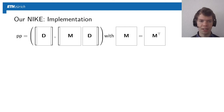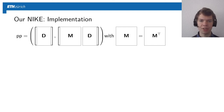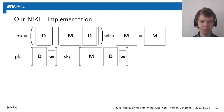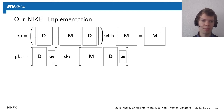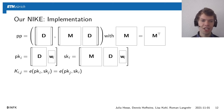Here is our concrete NIKE. The public parameters contain a uniformly random matrix D and another matrix we can write as M·D, where M is a symmetric uniformly random matrix. A normal public key is a vector from the span of D, and the secret key is M times this public key — both encoded in the group. This can be computed from the public parameters when you know the vector w_i over Z_q, which you know when you generate it yourself. The shared key is the inner product of the public and secret key, computed using a pairing.